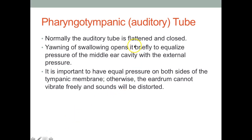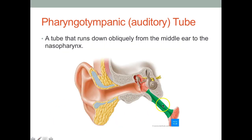Normally this tube is going to be flattened and closed; however, things like yawning or swallowing can briefly open it to stabilize pressure in the middle ear cavity. This is important because if the pressure on both sides of the tympanic membrane is not equal, that will affect how the tympanic membrane vibrates, and therefore it is going to distort hearing. It's important that we have the same amount of pressure on the outer ear area versus the inner ear area.